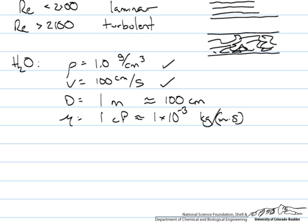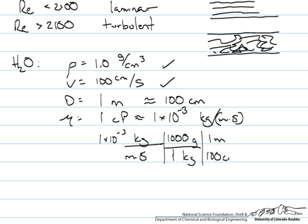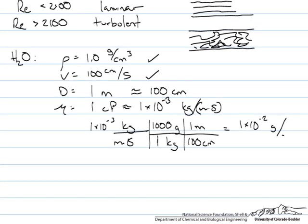And then the last is the centipoise. If we have 1 times 10 to the minus 3 kg per m second we can convert to grams using that conversion factor. And we can convert to centimeters using that conversion factor. So this is going to give us 1 times 10 to the minus 2 g per cm second. So now all of these units are in the same and we can go ahead and start to estimate our Reynolds number.